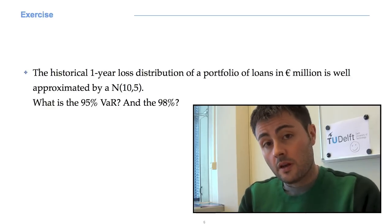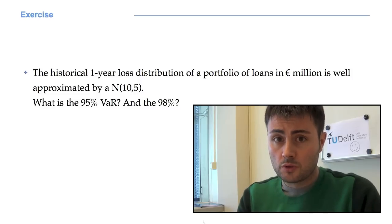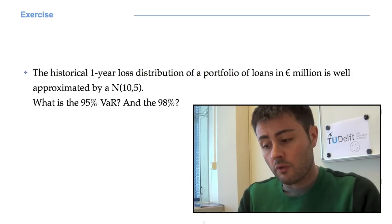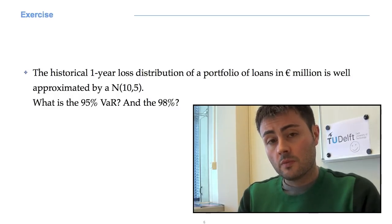And now, another exercise. We know that the historical one-year loss distribution for our portfolio of loans is well approximated by a normal(10, 5). That is to say, a normal distribution with mean μ equal to 10 and standard deviation σ equal to 5. Now, the question is, what are the 95 and the 98 percent VARs?